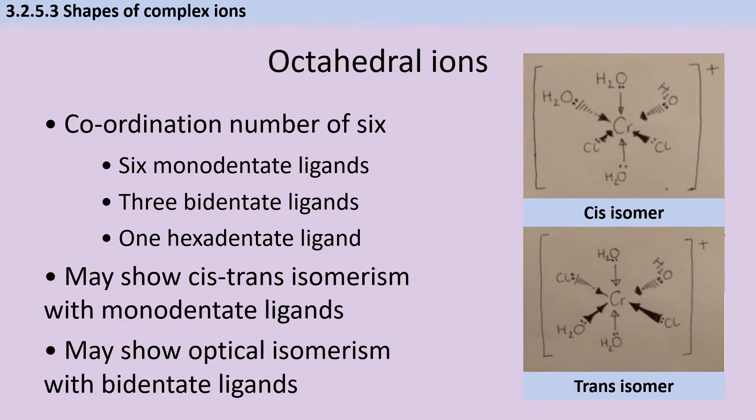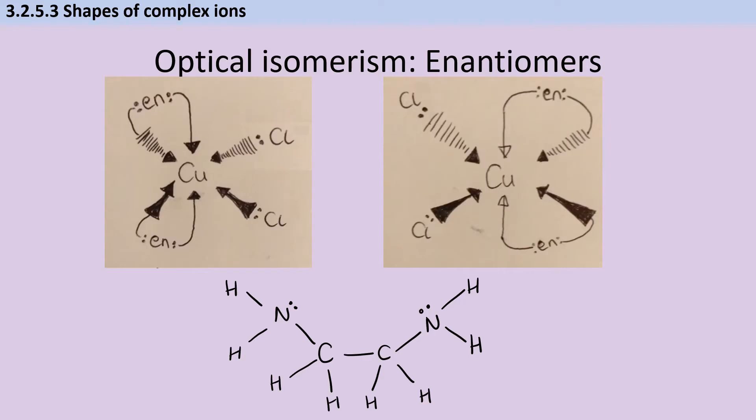If the ligands are monodentate, it's possible for the complex to show cis-trans isomerism depending on whether ligands of the same type are adjacent or not. If the ligands are bidentate, it's possible to have optical isomerism. These optical isomers or enantiomers are mirror images of one another. As you know from organic chemistry, these respond differently to plane polarized light—one rotates the light one way and one rotates it the opposite direction.